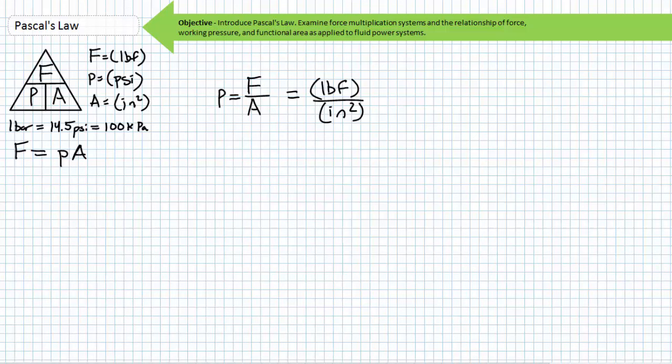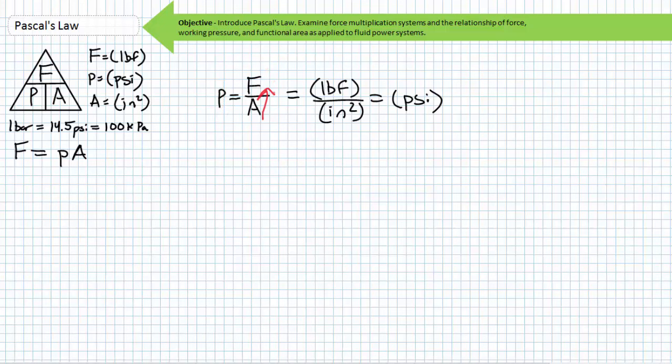The US customary units demonstrate this behavior quite nicely: pounds force over units of inches squared yield units of pounds per square inch, or PSI. Given constant functional area, increasing the force directly increases the working pressure; decreasing the force decreases the working pressure. Conversely, given constant force, increasing the functional area decreases the working pressure. Finally, given constant force, decreasing the functional area increases the working pressure.